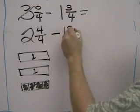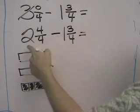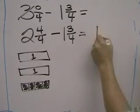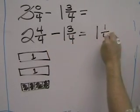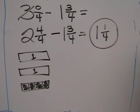Now we can subtract 1 and 3 fourths. 2 minus 1 is 1, and 4 fourths minus 3 fourths is 1 fourth. So the final answer is 1 and 1 fourth.